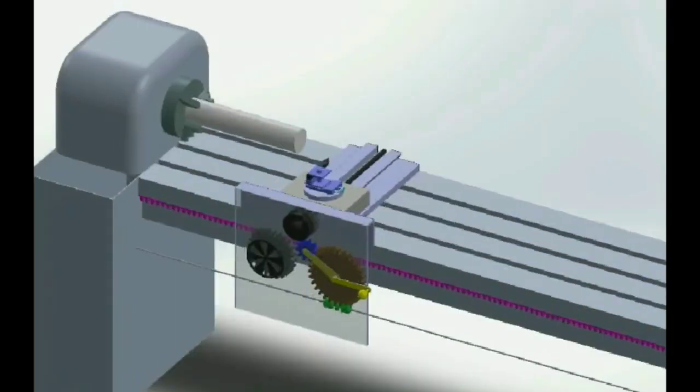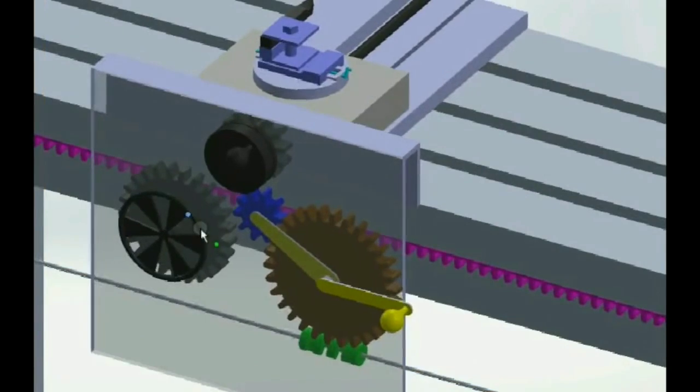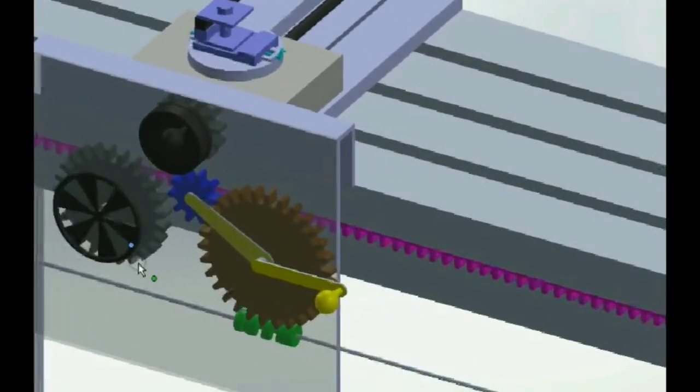The apron mechanism is a mechanism in the carriage which is behind how the feed and cross feed of the tool occurs.